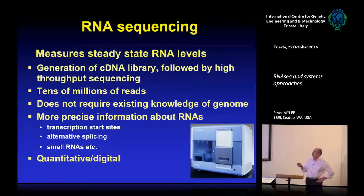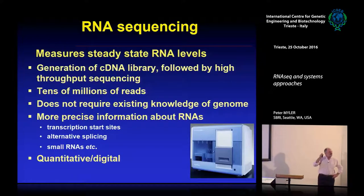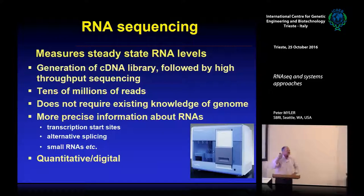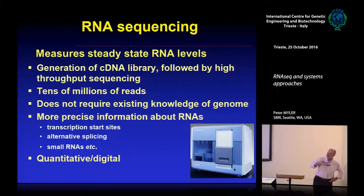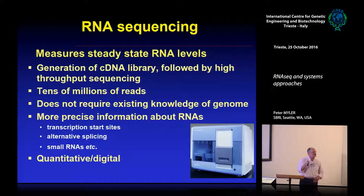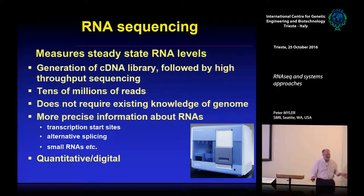We want to measure the steady-state RNA under a given condition and compare it to another condition. The thought is that this reflects which proteins are being made — we'll see later that's not entirely accurate. The reason we do it is that it's easy: you can make cDNA libraries from your parasites easily, get tens of millions of reads for a very low cost. It doesn't even require existing knowledge of the genome.